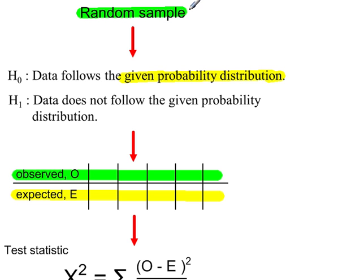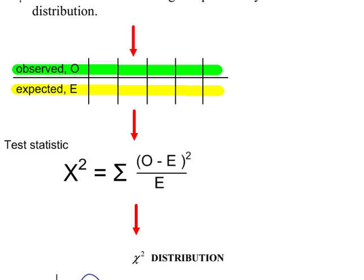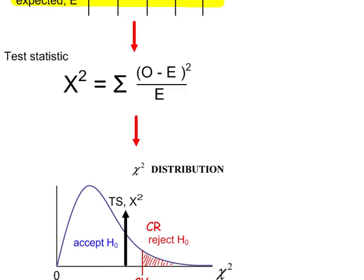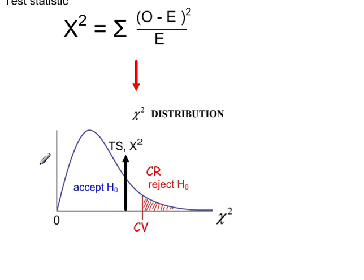To summarize the method: start with a random sample, state H0 and H1 mentioning the probability distribution name and its parameters if applicable, work out your E values from the observed O values, calculate your test statistic, then using the chi-squared distribution work out the number of degrees of freedom and the critical value. The most complicated part is really just remembering how many degrees of freedom to use.